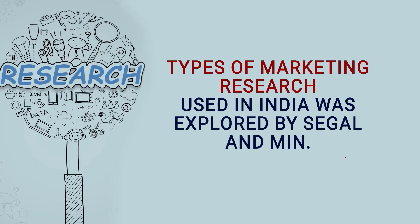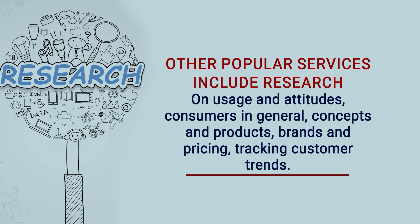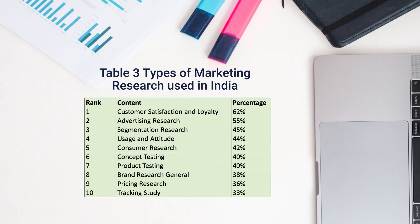Types of marketing research used in India were explored by Segal and Min. They found that Indian companies most commonly request customer satisfaction surveys, followed by advertising research and market segmentation research. Other popular services include usage and attitude research, consumer research, concept testing, product testing, brand research, and pricing research. The ranking in Table 3 shows customer or customer satisfaction and loyalty surveys at number one, advertising research at two, segmentation at three, usage and attitude at four, consumer research at five, concept testing at six, product testing at seven, brand research at eight, pricing research at nine, and tracking study at ten.